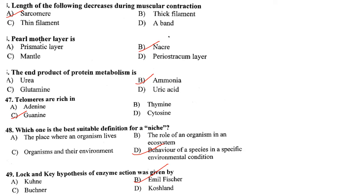Telomeres are rich in guanine and are found at the ends of chromosomes. The best suitable definition for a niche is the behavior of a species in a specific environmental condition.